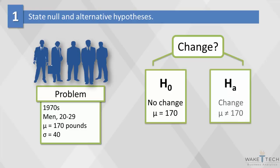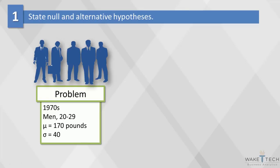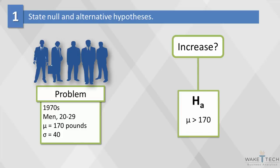Under the alternative hypothesis, we assert that the mean weight has changed — mu is not equal to 170 pounds. This is called a two-sided test, the most common form of hypothesis testing. We can also do a one-sided test in which we ask if weight has increased over time, so the alternative hypothesis would be mu is greater than 170 pounds.